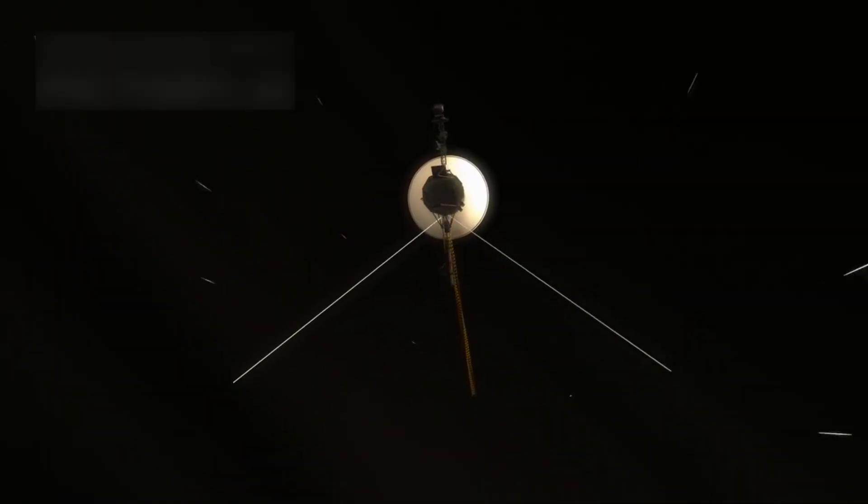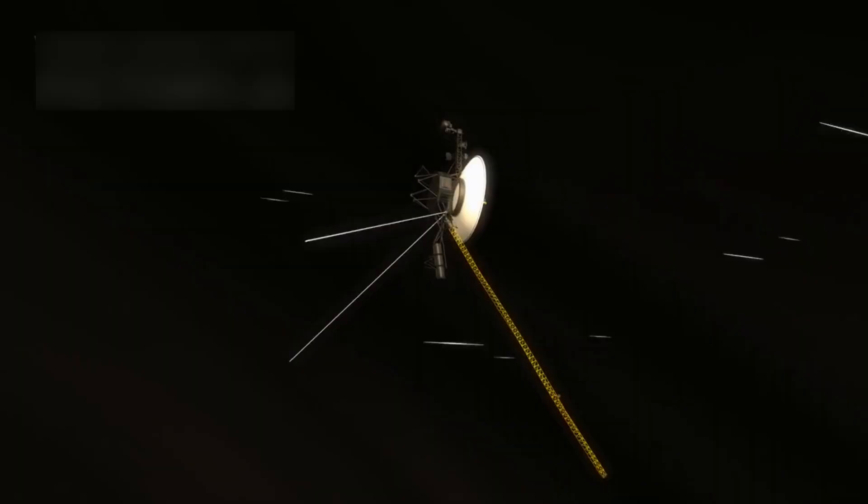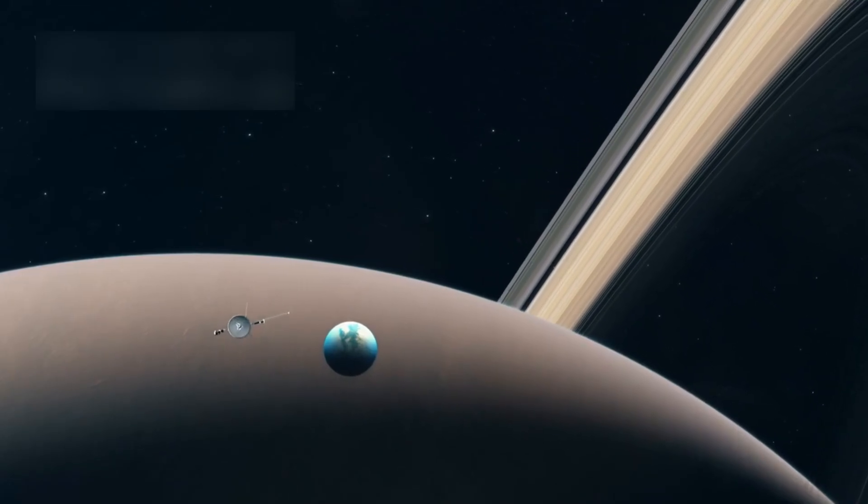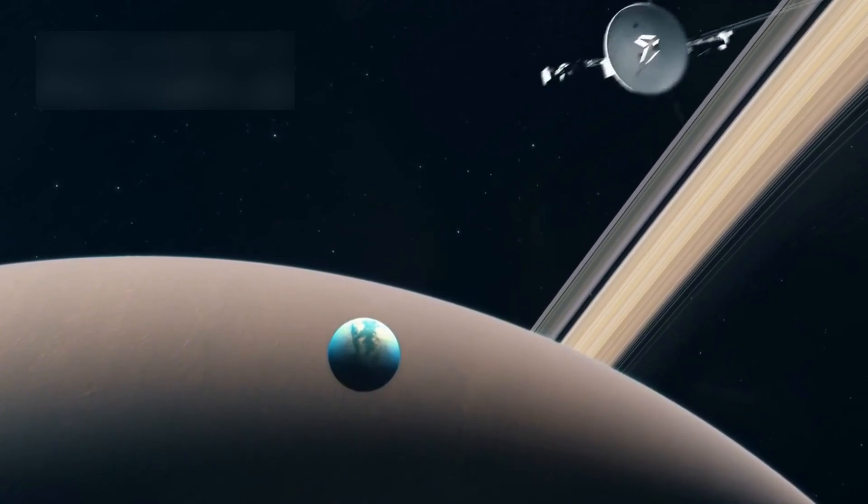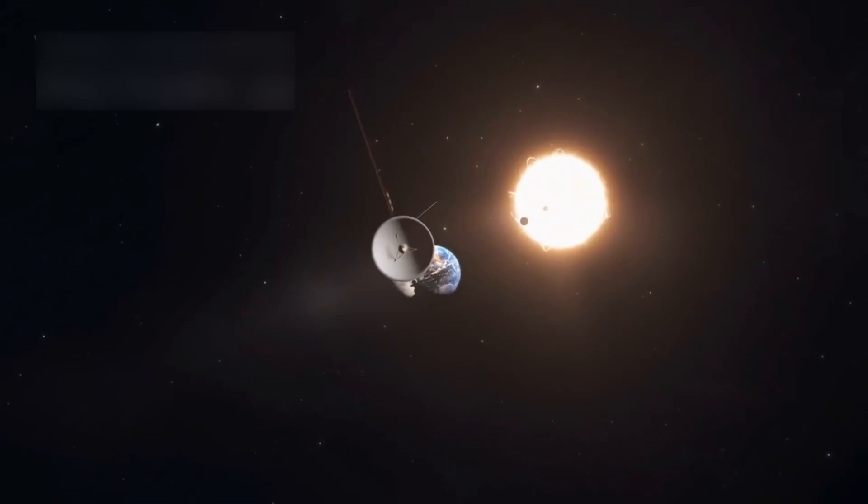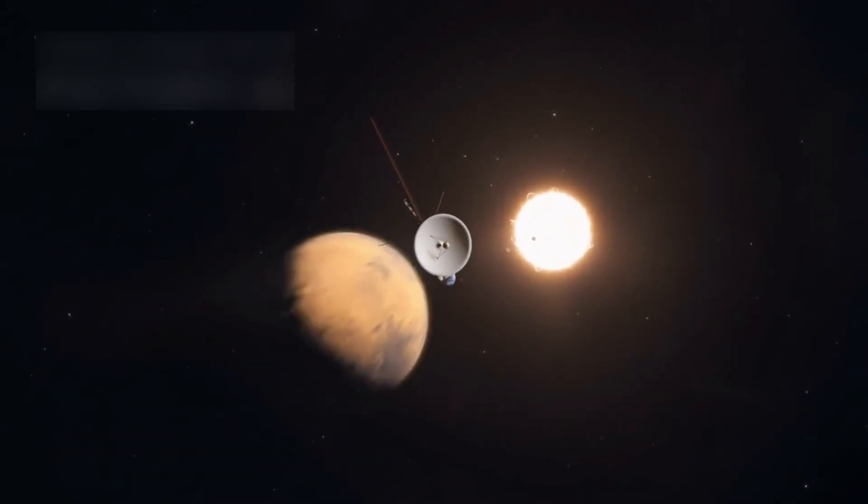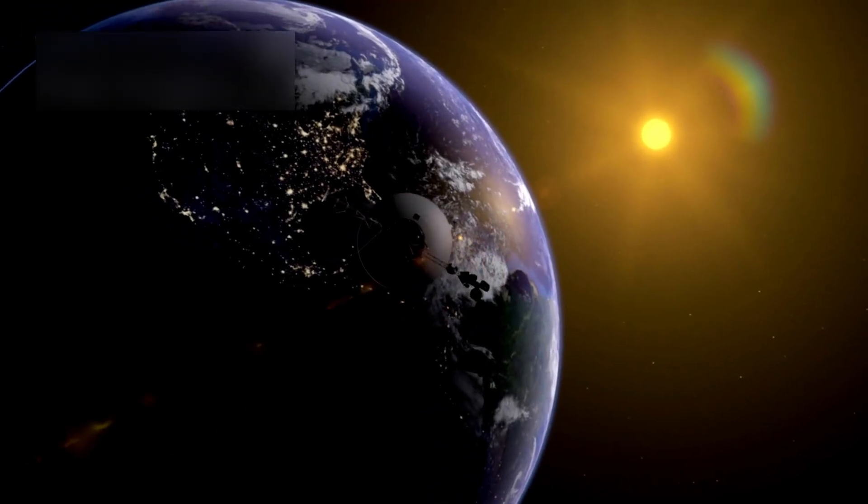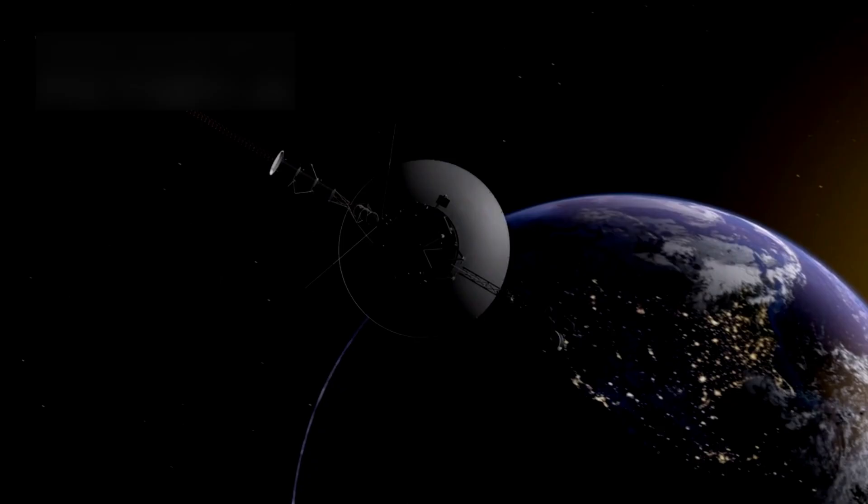As Voyager 1 kept flying, it continued to operate decades past its expected lifespan. It has now been working for over 45 years, traveling more than 14 billion miles from Earth. In 2012, it crossed a major boundary called the heliopause, where the influence of our sun fades and interstellar space begins. This was a historic moment, making Voyager 1 the first human-made object to leave the solar system.